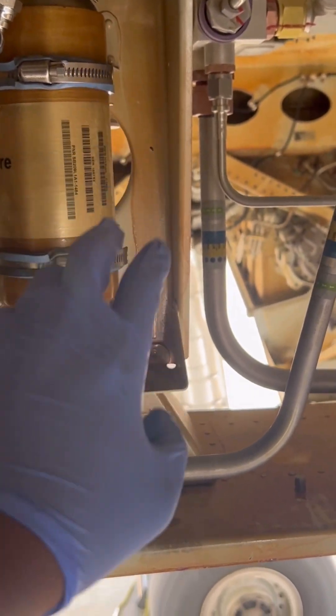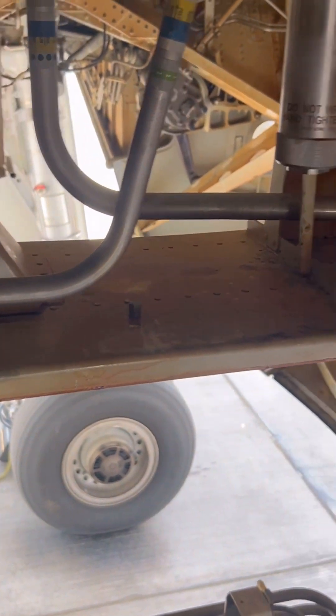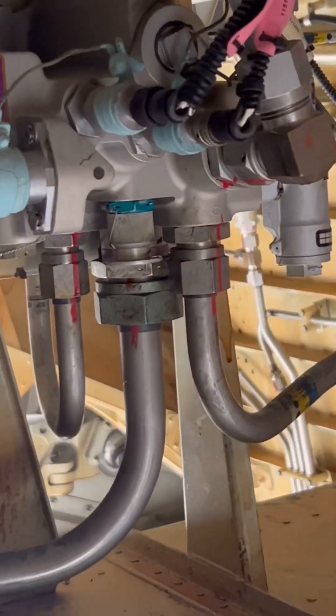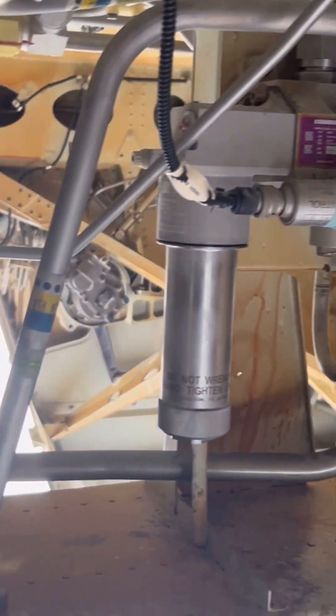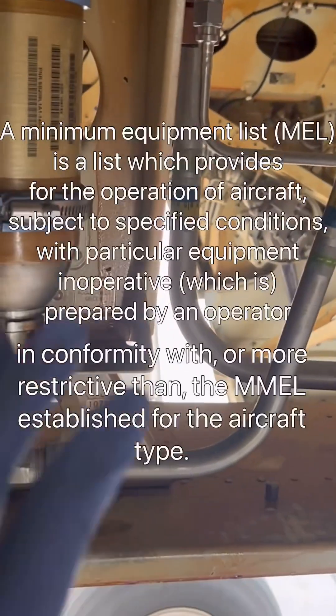In today's video, we are simulating a situation whereby a green system power accumulator is not available and the plane has to fly. The big question is: can the aircraft fly without a green system power accumulator? To find an answer, we refer to a document known as the Minimum Equipment List.